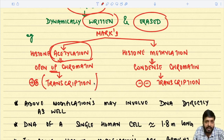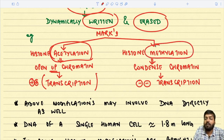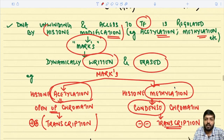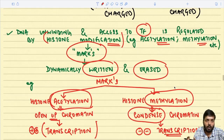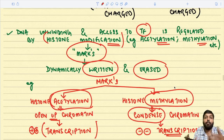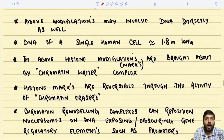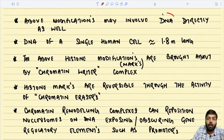Similarly, there are certain marks — for example methylation — which is another type of histone modification. This modification condenses the chromatin forming heterochromatin, which inhibits transcription. So DNA condensation or opening depends completely on histone modifications like acetylation and methylation. These marks are reversible — they can be written and erased. Such modifications can also involve the DNA directly, in the form of DNA methylation.